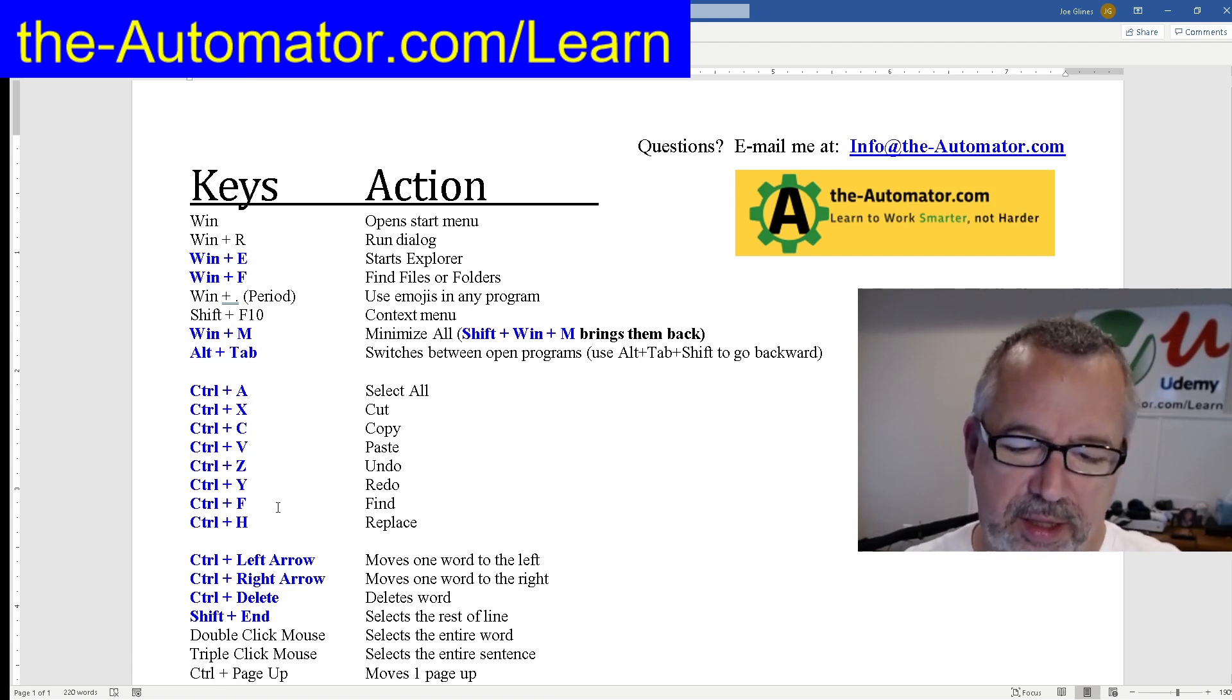So, Control F, I did the, that one will search, Control H for search and replace things. These are big ones too, this navigating around. So, if like I'm here and I hit Control left arrow, it's going to jump across a word and Control right arrow moves me back that way, right? If I hit Control delete, it will delete that word, the things to the left.